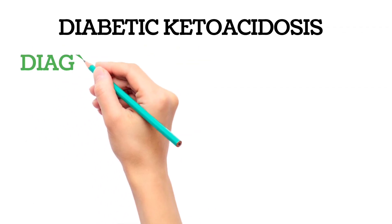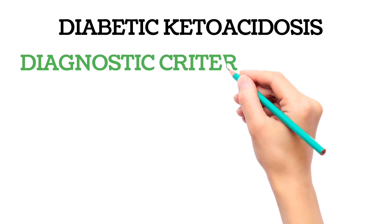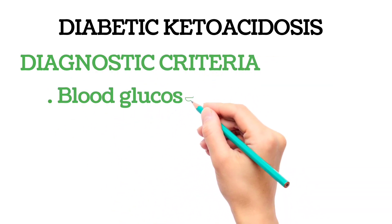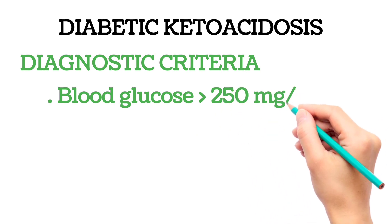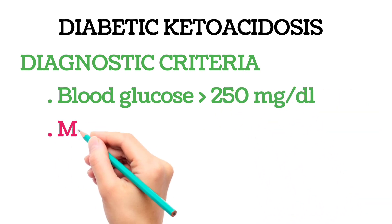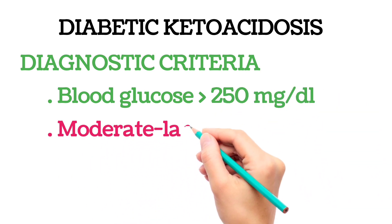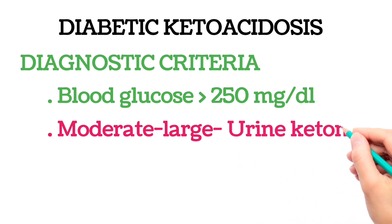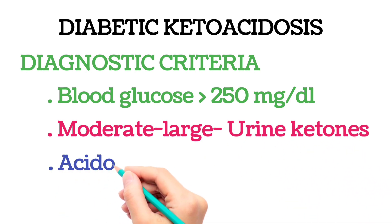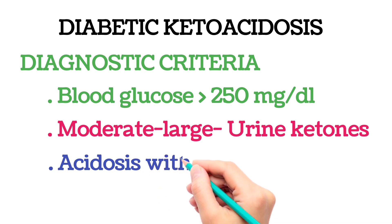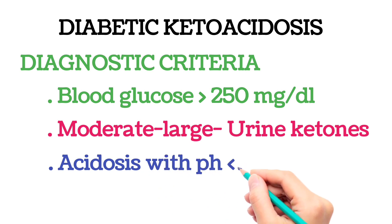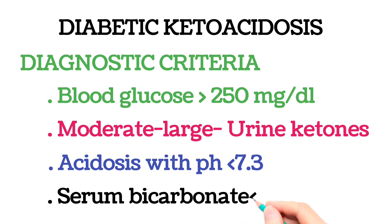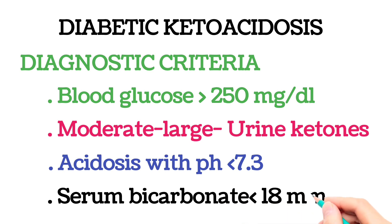Diagnostic criteria for DKA: blood glucose more than 250 mg/dL, moderate to large urine ketones, acidosis with pH less than 7.3, and serum bicarbonate less than 18 mmol/L.